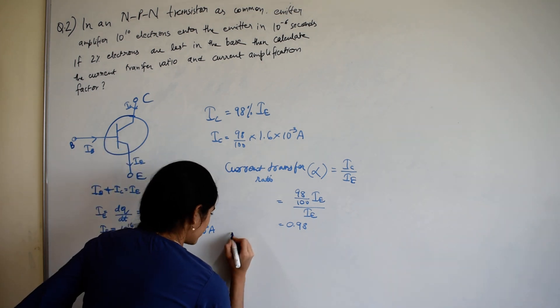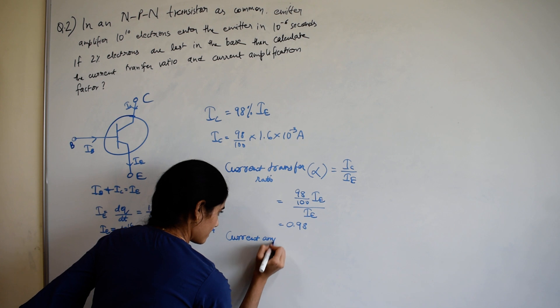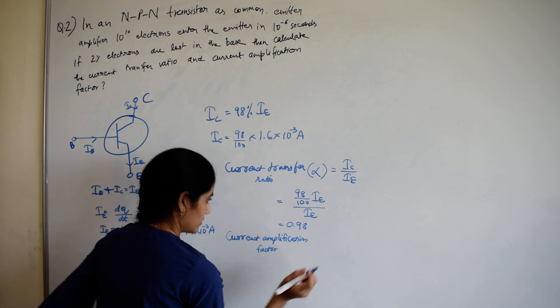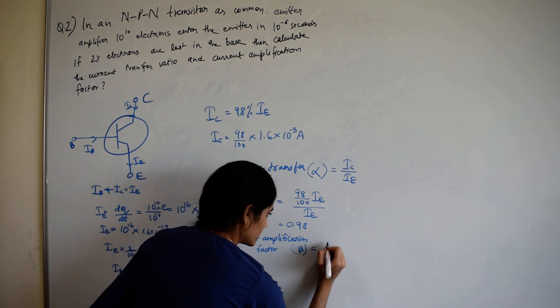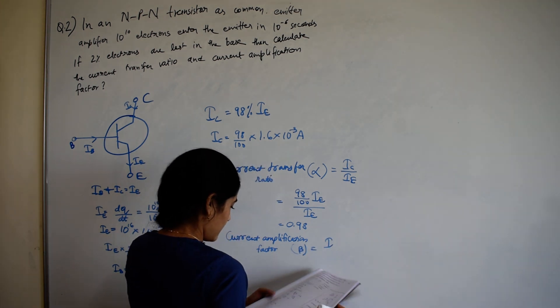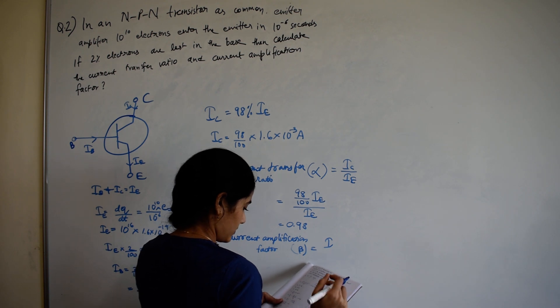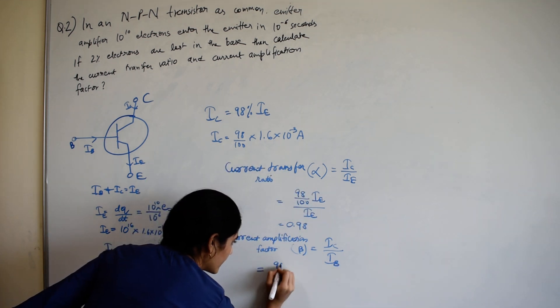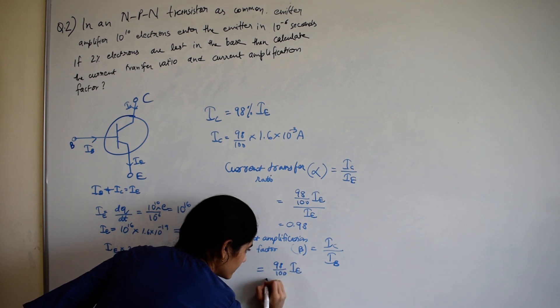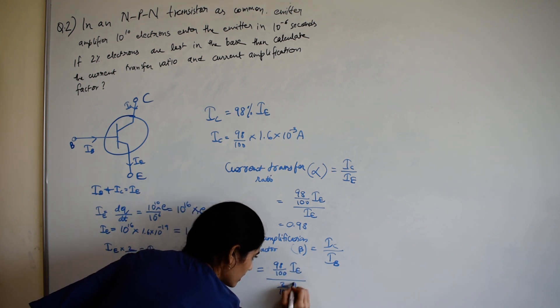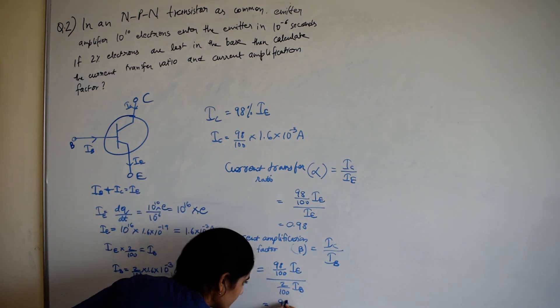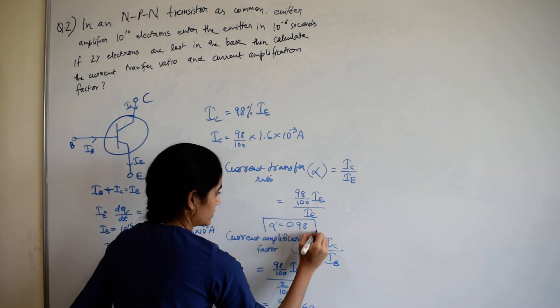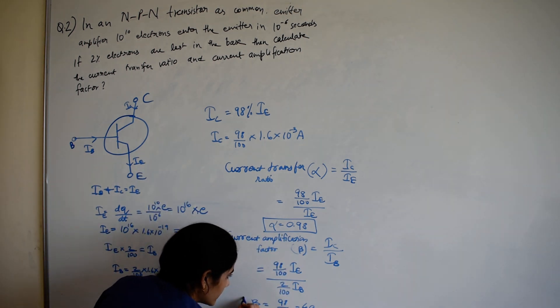Current amplification factor, beta is equal to IC upon IB, which is equal to 98 divided by 100 of IE divided by 2 divided by 100 of IE, which is equal to 98 divided by 2, 49. Alpha equal to 0.98, beta equal to 49.